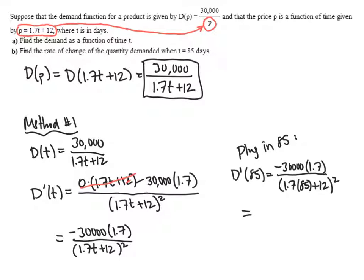When we do all those calculations, we end up with negative 2.08229, depending on how many decimal places they end up asking us for. But the units here would be units per day. So we're talking about the rate at which the quantity demanded, which would be however many units are demanded, are changing with respect to time.